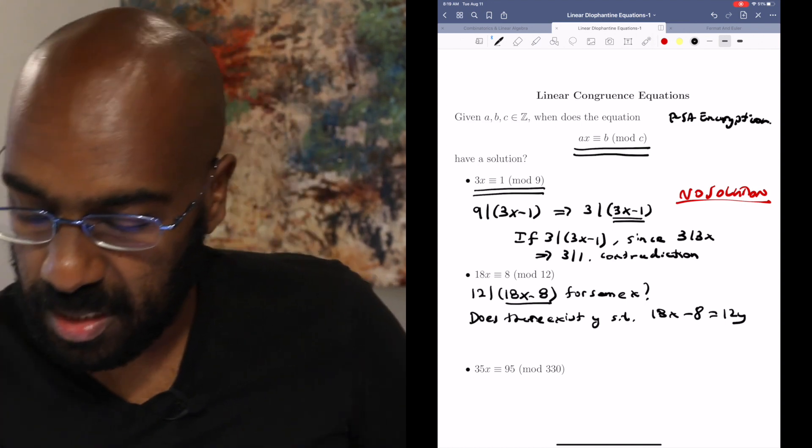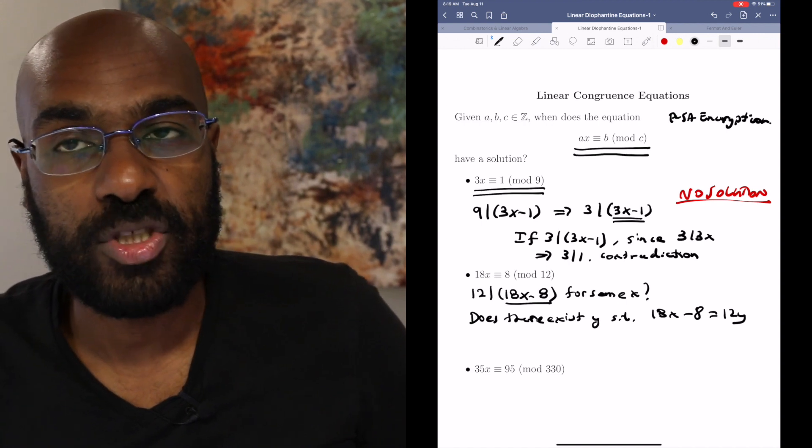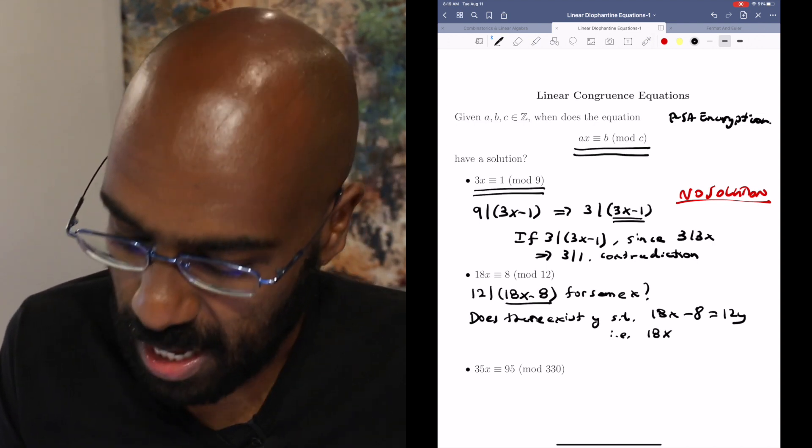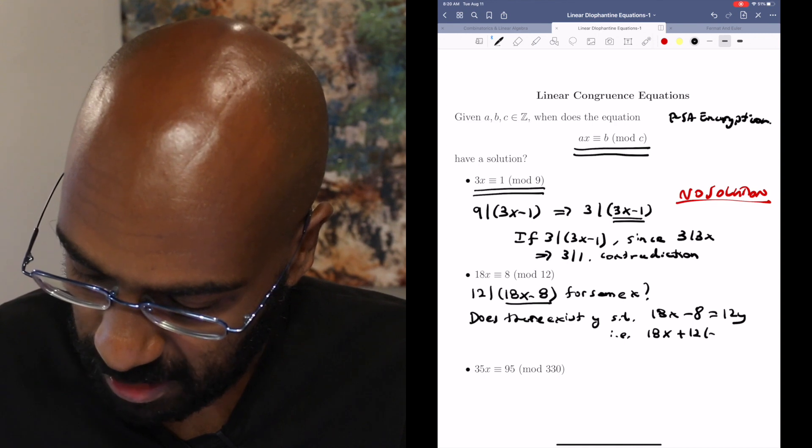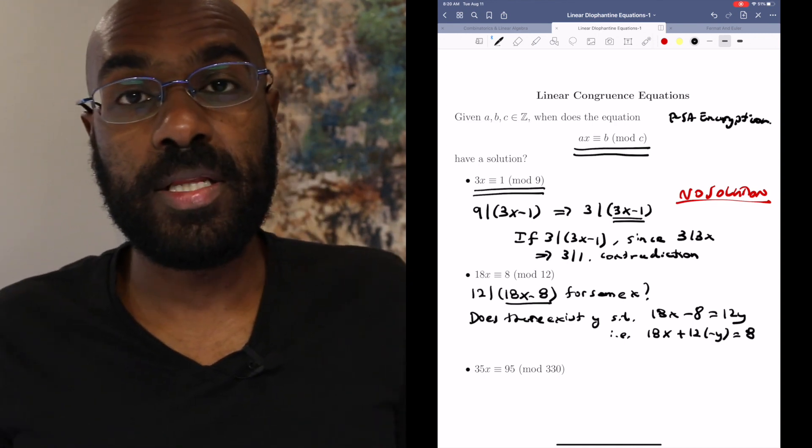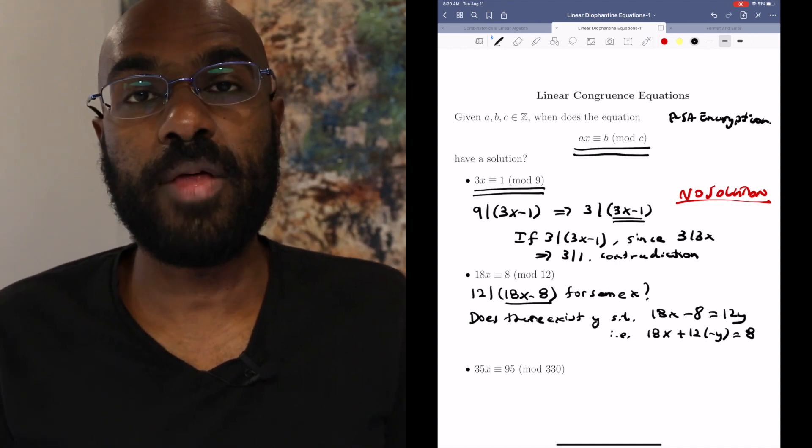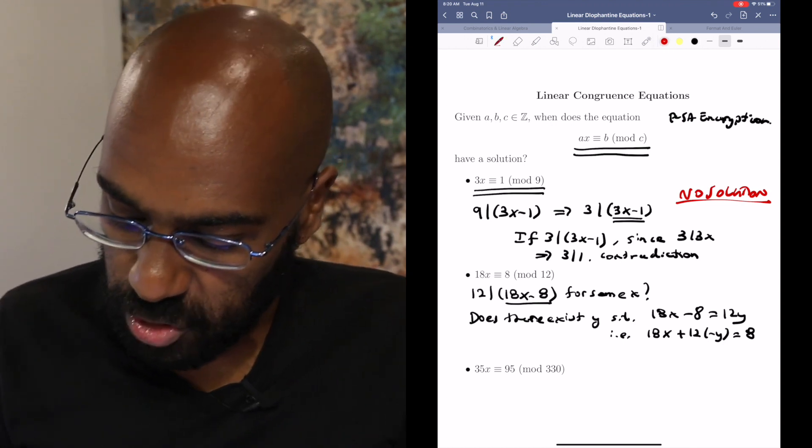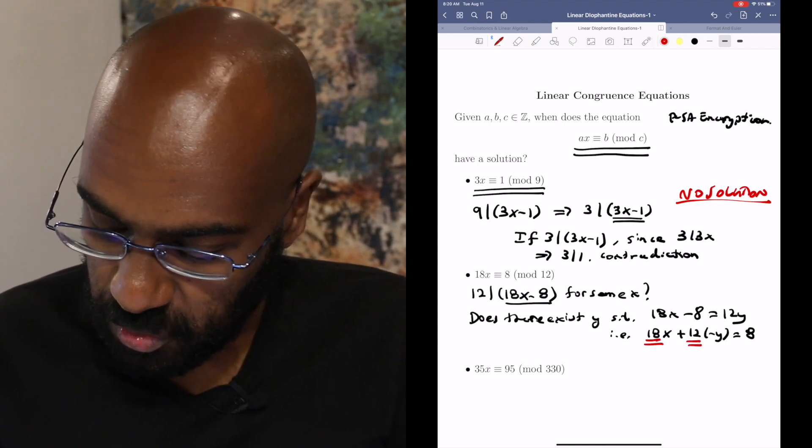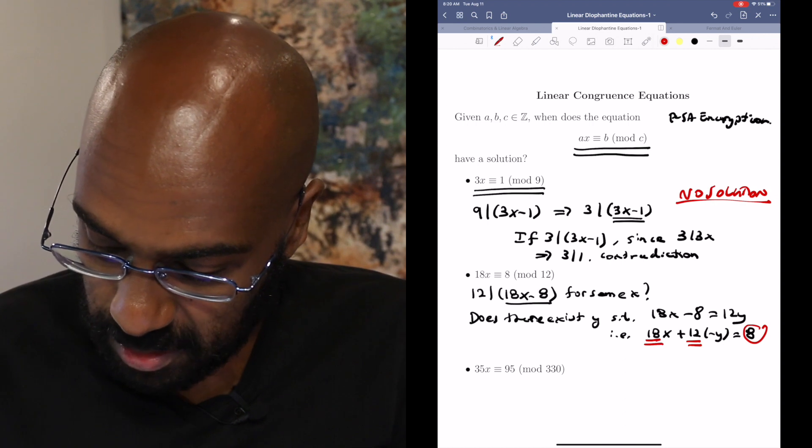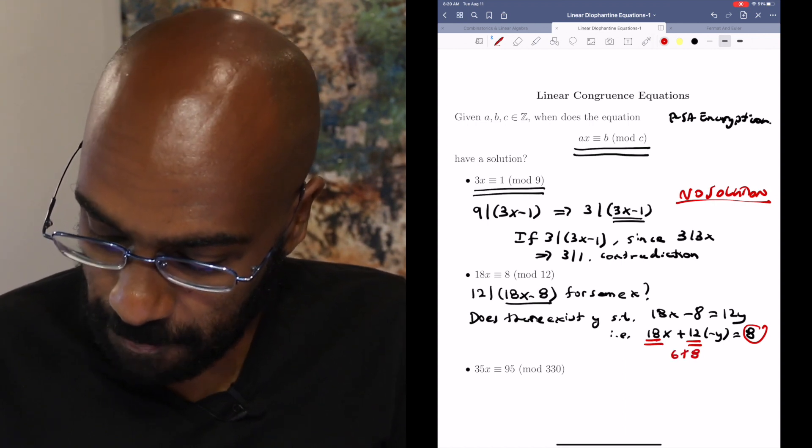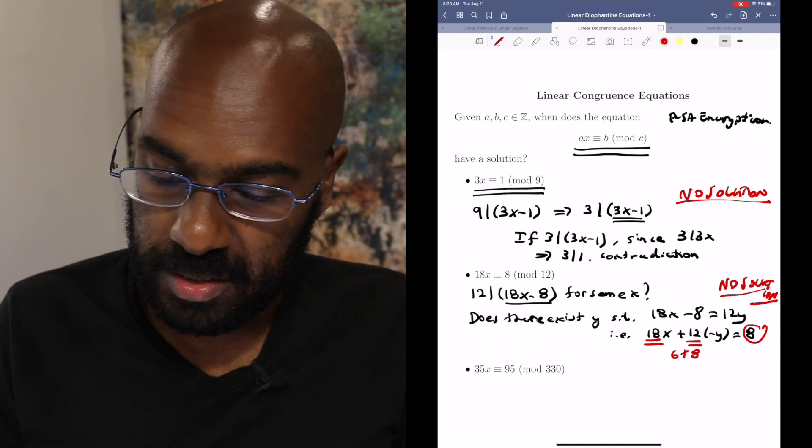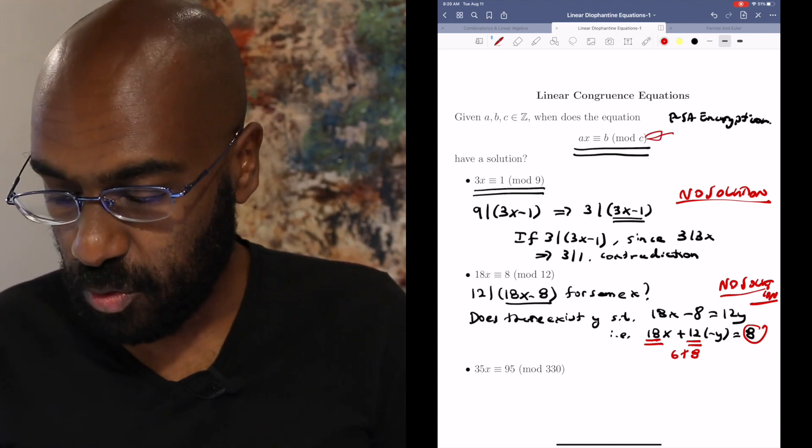So we could say, does there exist a y such that 18x minus 8 is 12y. So this looks almost like a linear Diophantine equation. We can rearrange things around to say this is trying to find values of x and y, for which 18x plus 12 times negative y is 8. And in our video on linear Diophantine equations, we had a way to determine whether or not such a thing had a solution, and if it does, what the full solution set is. We have to check that the GCD of these two things is a factor of this. The GCD of 18 and 12 is 6. 6 doesn't divide 8, so this has no solution. So we're getting a sense that really these linear congruence equations look like linear Diophantine equations in disguise.